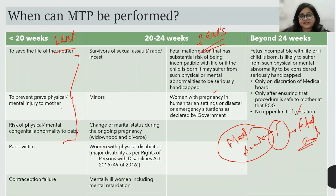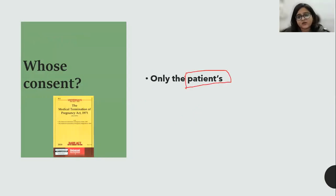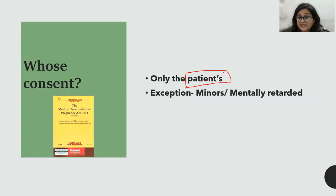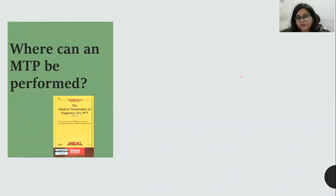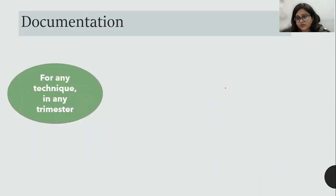To summarize the 20–24 week select indications: sexual assault, minors, divorced or widowed, disabilities, fetal malformations, and war or humanitarian settings. Regarding consent — this has not changed — only the patient's consent is required; husband's or partner's consent was never required and this remains the same, unless the patient is a minor or mentally retarded. Regarding location, MTP can be performed at any government hospital or a place approved by the district-level committee — this also has not changed.